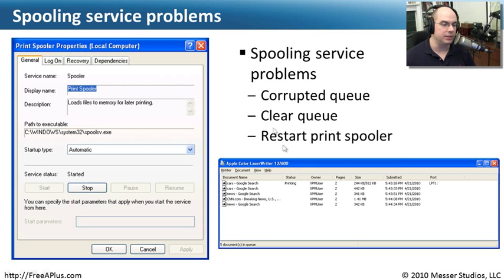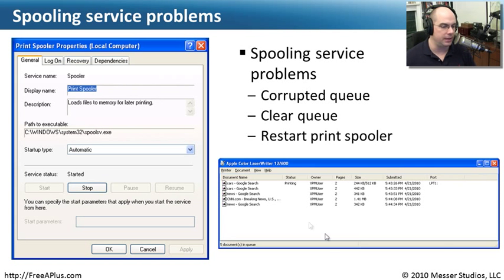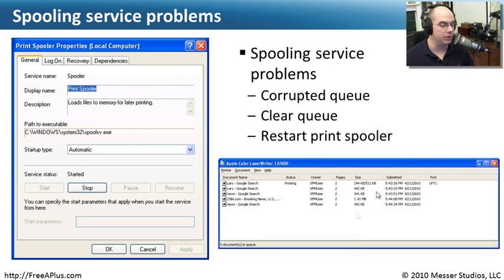You might also run into a situation where something in the queue is corrupted and causing a problem — it just won't leave the queue, it won't print out, it won't go to the printer. One thing you can do is go to the top item in the queue and delete it, or clear out everything in the queue. Once you've cleared it out, restart your print spooler, and most of the time that will resolve those nagging spooler issues.